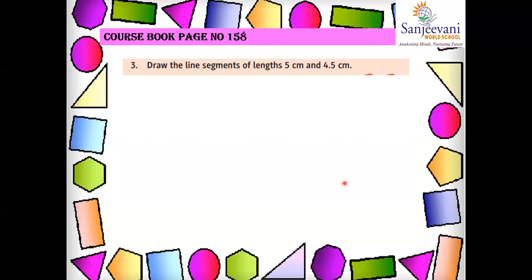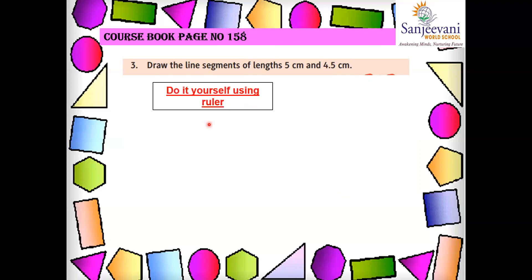Again on page 158: draw a line segment of length 5 centimeters and 4.5 centimeters. A line segment has two end points. You will do this yourself using a ruler in your notebook — write the question number, the page number, and draw the two line segments.